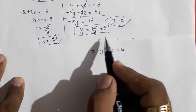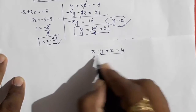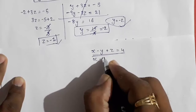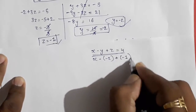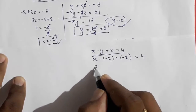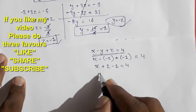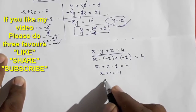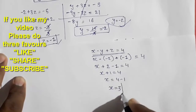Now we put the values of y and z into the first original equation to find x. Substituting y equals minus 2 and z equals minus 1: x minus (minus 2) plus (minus 1) equals 4, so x plus 2 minus 1 equals 4, giving x plus 1 equals 4, and therefore x equals 3.